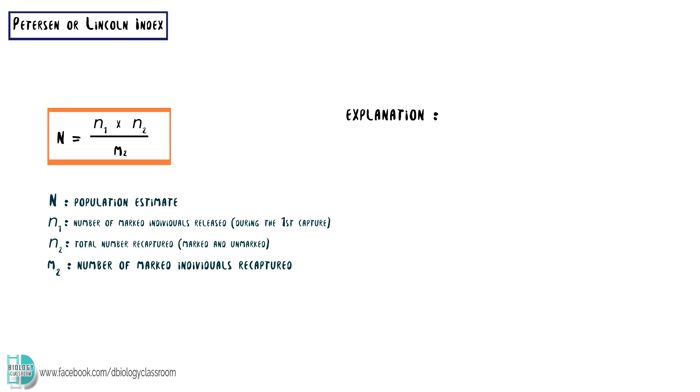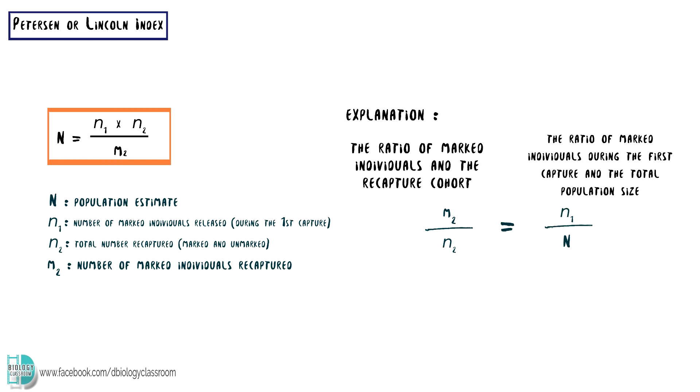The idea of this calculation is pretty simple. We assume that the ratio of marked individuals in the recapture cohort is the same as the ratio of marked individuals during the first capture to the total population size. When you rearrange the equation, you will get the formula for the Lincoln index.